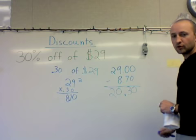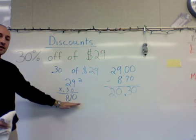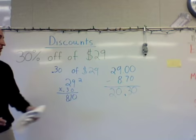Remember, the way we solve this is: we take the percentage off, we turn it into a decimal, we multiply it by the original price. Whatever we get as an answer, we then subtract that from the original price, and it gives us our new sales price of $20.30.